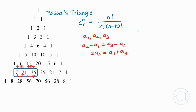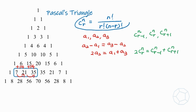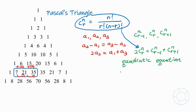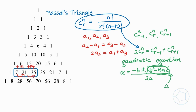Now if we have three binomial coefficients forming our arithmetic sequence — nCr minus 1, nCr, and nCr plus 1 — then we will have the equation 2 times nCr equal to nCr minus 1 plus nCr plus 1. Using the formula for the three terms, after simplification we will get a quadratic equation with some unknown coefficients. To solve it we need the quadratic formula: x equals negative b plus or minus the square root of b squared minus 4ac over 2a. In particular, we will focus on the discriminant b squared minus 4ac.